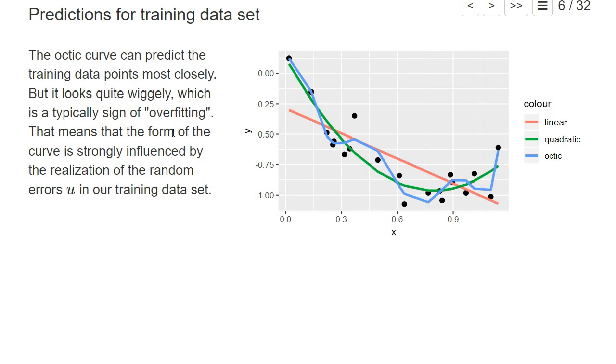However, we also see that this is quite wiggly, which is a typical sign of overfitting.